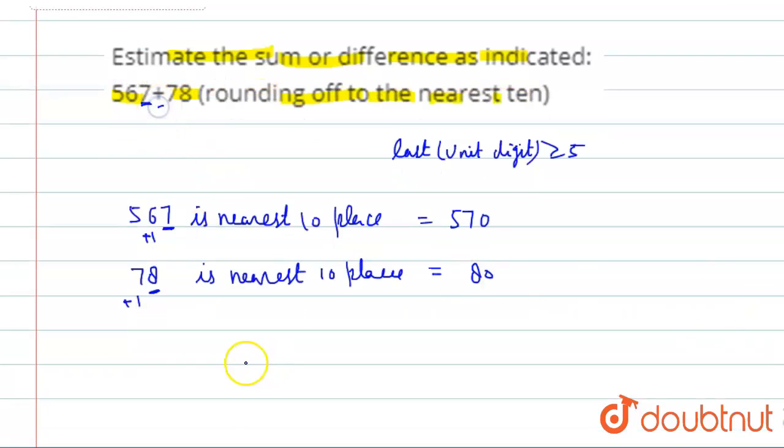Now we will find the sum. Estimated sum is equal to 570 plus 80.